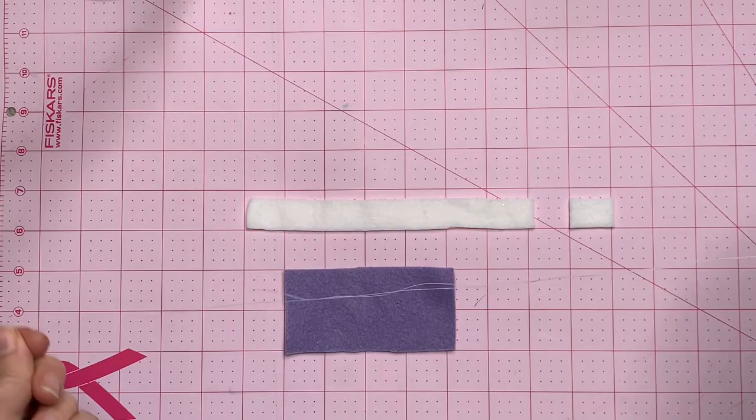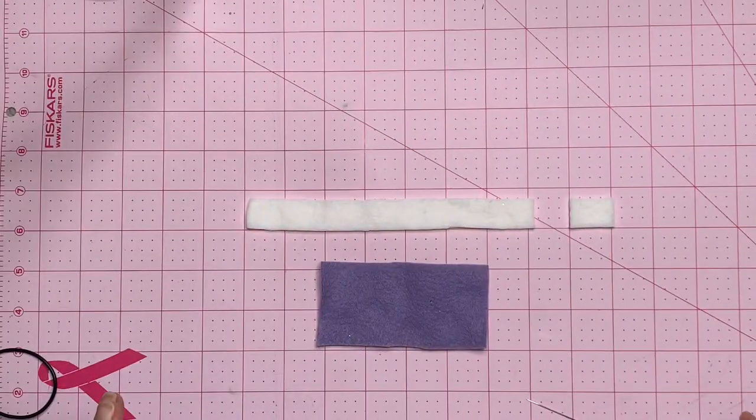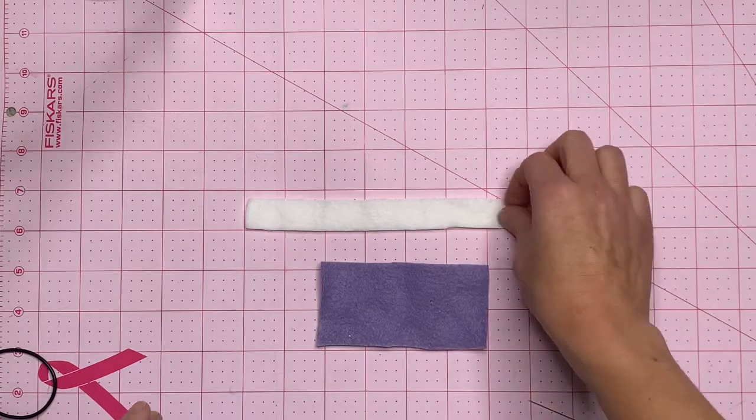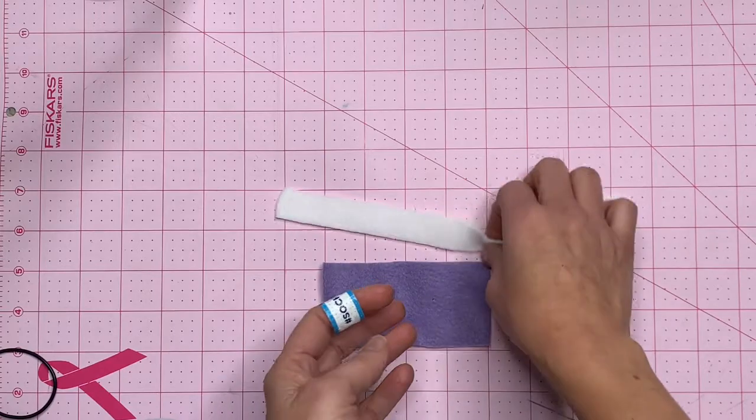You will also need a needle and thread. You can use a machine for this but it's really simple so you don't even have to take it out. Okay, so the first thing we're going to do is cut the scarf. This is super easy.